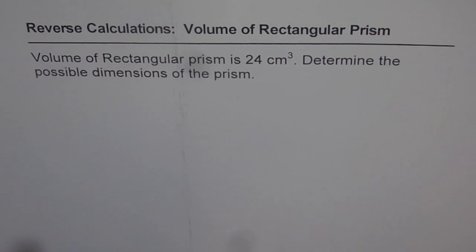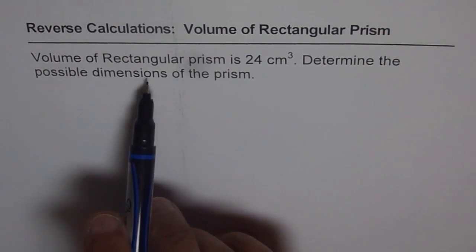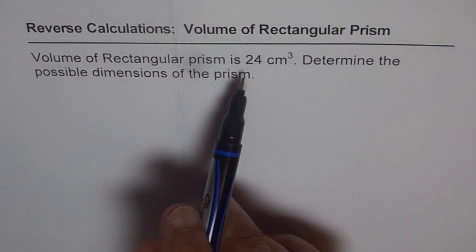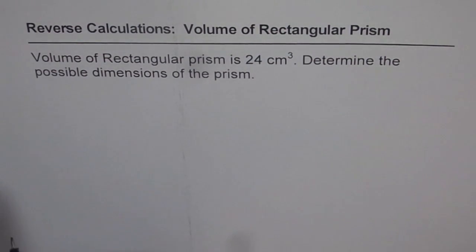It is a very effective technique. The question before us is: volume of rectangular prism is 24 centimeter cube. Determine the possible dimensions of the prism. All possible, that means, you understand, it is kind of an open question. We are not given length, width or height, but we are supposed to find all possible dimensions of a rectangular prism.